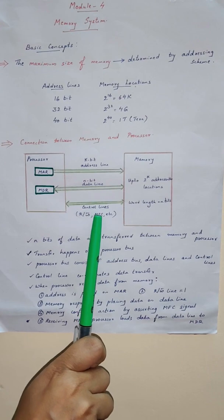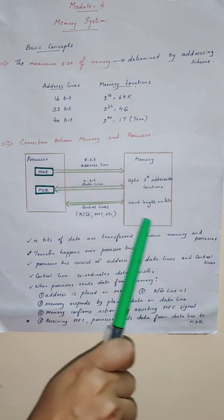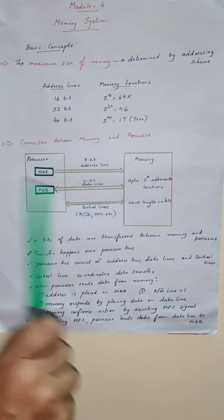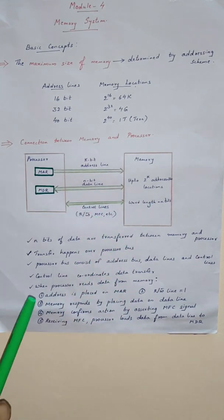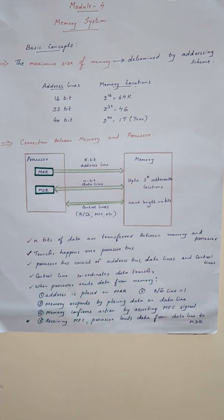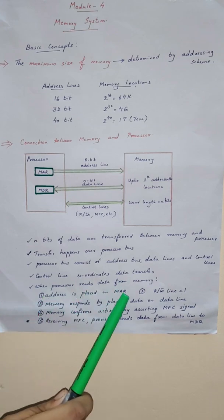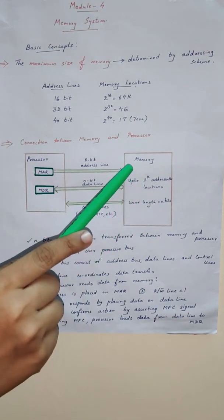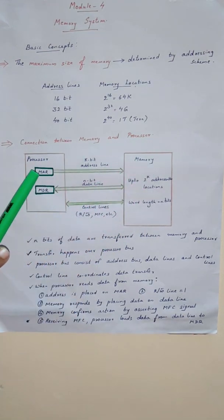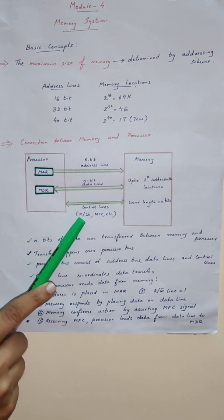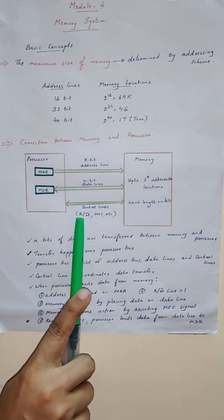Another signal is the memory function complete signal. Once the memory is done doing a particular operation, it will assert a memory function complete signal. So let's see when a processor reads data from the memory, what are the different steps. The first step is the address is placed on the MAR register. When the processor wants to read something from the memory, that particular memory location's address should be stored in a processor register. Next, the control signal — the read or write signal — should be set as 1, because that denotes a read operation.